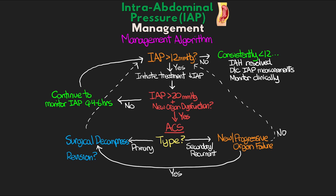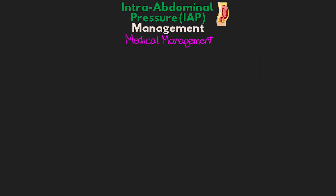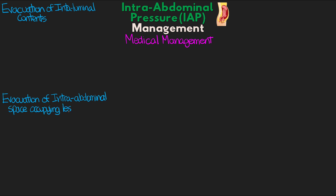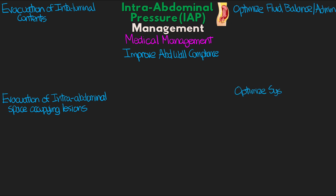Now that we've reviewed the management algorithm, we need to talk about the medical management. There is an algorithm in which we move in a stepwise fashion from one treatment to the next if the intra-abdominal pressure is worsening or not improving. There are five different components to our treatment strategy: evacuation of intra-luminal contents, evacuation of intra-abdominal space-occupying lesions, improving abdominal wall compliance, optimizing fluid balance and administration, and optimizing systemic and regional perfusion.